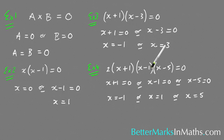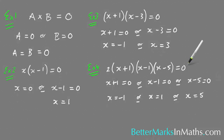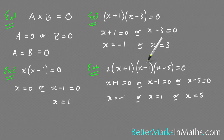What you're really doing when using the null factor law to solve these equations is finding the x-intercepts of that particular function. For example, y equals (x plus 1)(x minus 3) — by letting the expression equal 0, you're setting y equals 0, and that's how you find x-intercepts. So the null factor law is just a way of getting the x-intercepts from the factorized form of a quadratic, cubic, or quartic function.